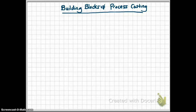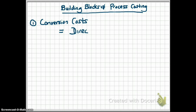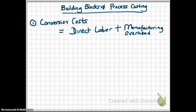Before we calculate the process cost of a product, we need to introduce some more terminology. You've seen some of this before. The conversion cost is defined as direct labor plus manufacturing overhead. In process costing, we always split our costs into direct material and conversion costs. Whenever you see the term conversion cost, that includes your direct labor plus manufacturing overhead.